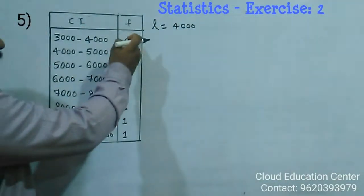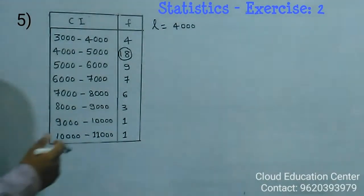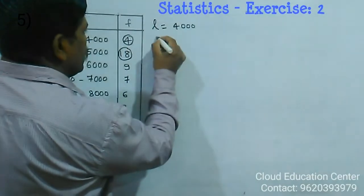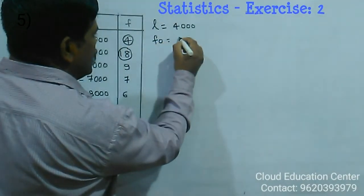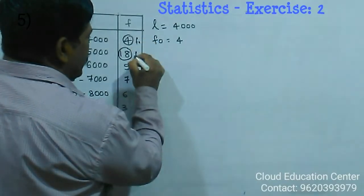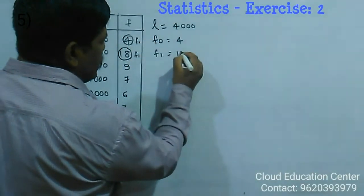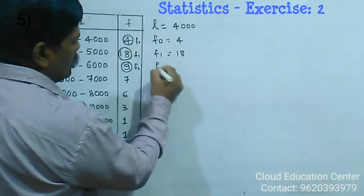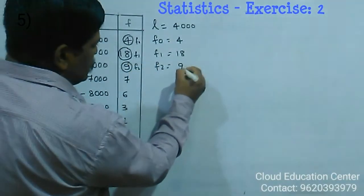And this is called a preceding frequency of the modal class. That is, f0 is 4. It is called f0, it is called f1, and f1 is nothing but 18. And this is called f2, f2 is nothing but 9.